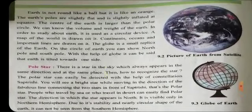Earth is not like a ball, but it is like an orange. The shape of our earth is not like a ball — it is like an orange. We can call it an oval shape. When you see the shape of our earth, it is somewhat like a ball, so it is like the shape of an orange.